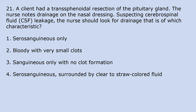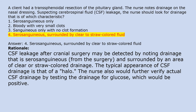A client had a transsphenoidal resection of the pituitary gland. The nurse notes drainage on the nasal dressing and suspects cerebrospinal fluid (CSF) leakage. The nurse should look for drainage of which characteristic? 1. Serosanguineous only. 2. Bloody with very small clots. 3. Sanguineous only with no clot formation. 4. Serosanguineous surrounded by clear to straw-colored fluid. Answer 4. Rationale: CSF leakage after cranial surgery may be detected by noting drainage that is serosanguineous from the surgery and surrounded by an area of clear straw-colored drainage — the typical appearance of a halo. The nurse would further verify by testing the drainage for glucose, which would be positive.